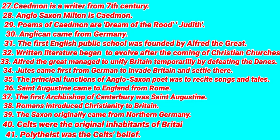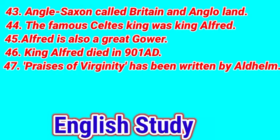The Saxons originally came from Northern Germany. Anglo-Saxon poetry was passed down through oral traditions. The original inhabitants of Britain were the Celts. The Celts were polytheists. The Anglo-Saxons called Britain 'Angloland.' The famous Celts king was King Arthur. Alfred the Great, besides being a poet, was also a great lawgiver. King Alfred died in 901 AD.